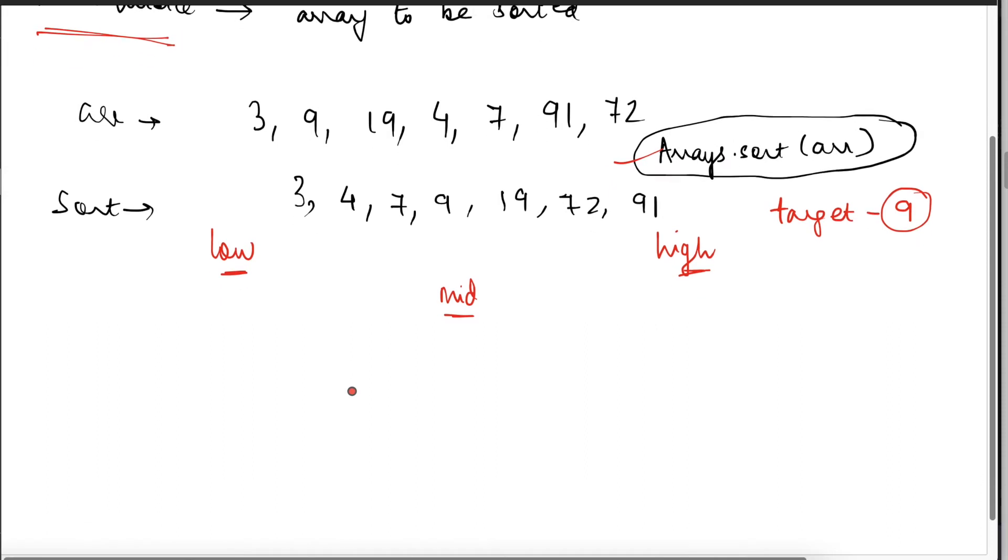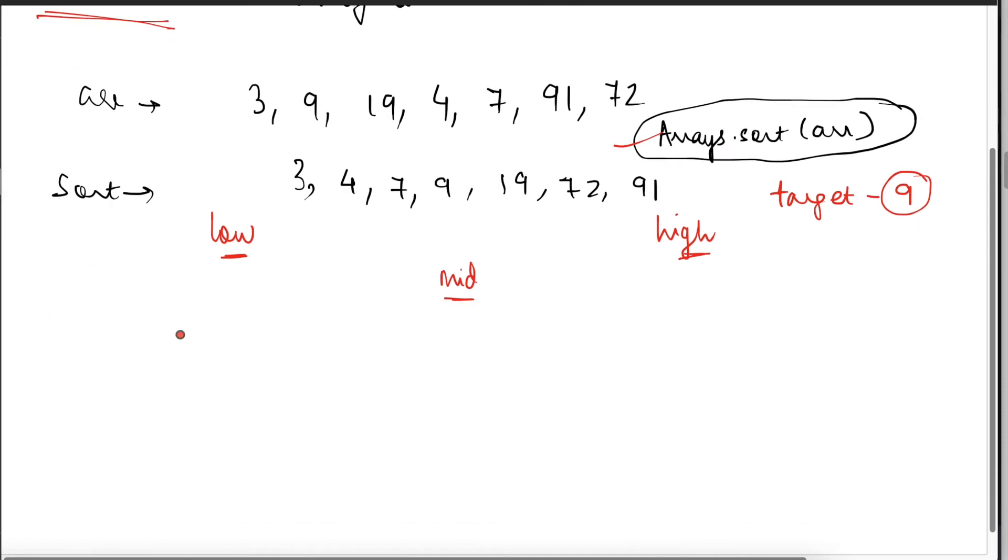In binary search, there are these three pointers which we use. So low and high pointer and the mid pointer. Low pointer is going to be equal to zero initially. It starts from the beginning. And high pointer is the one which starts from the back. What is mid? Mid is going to be equal to low plus high by 2.